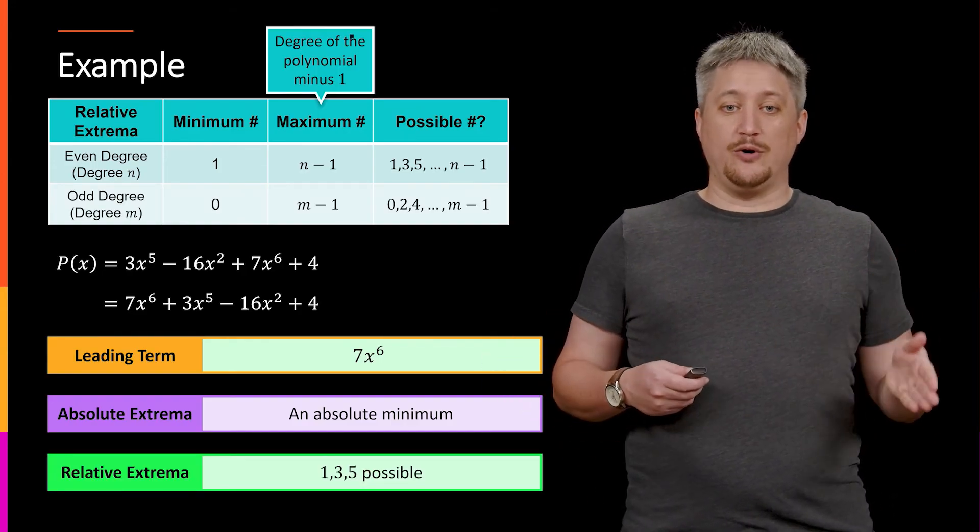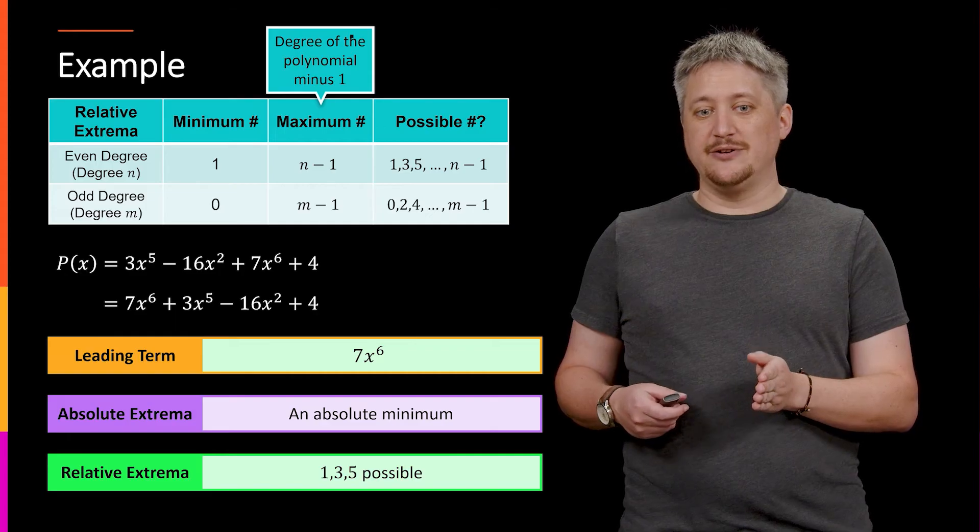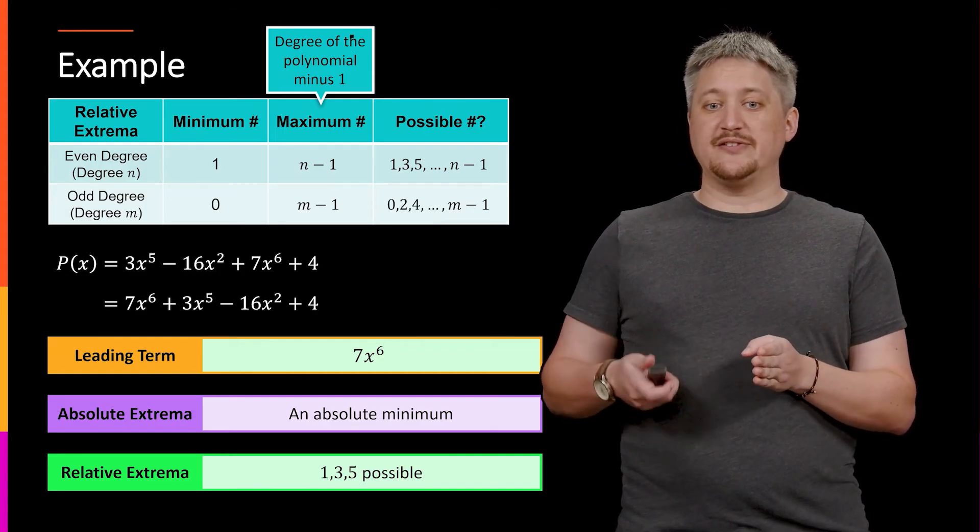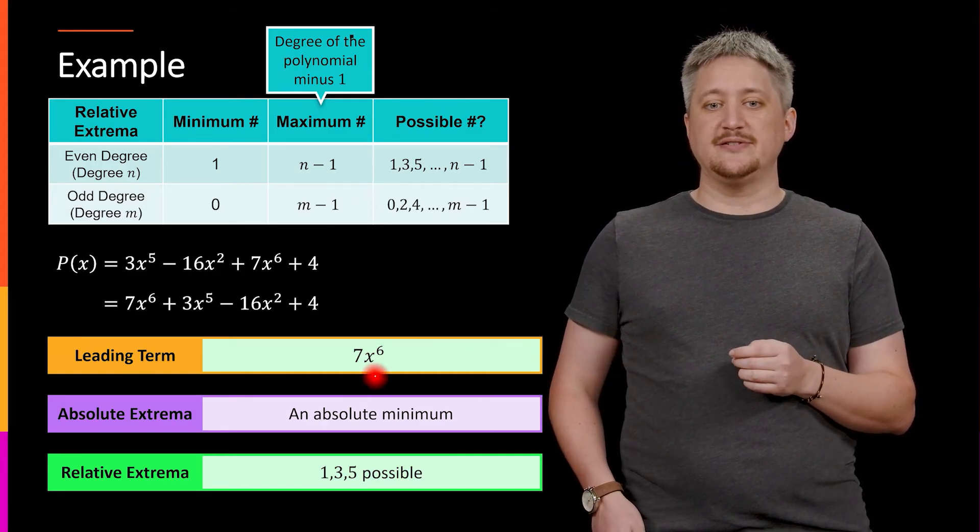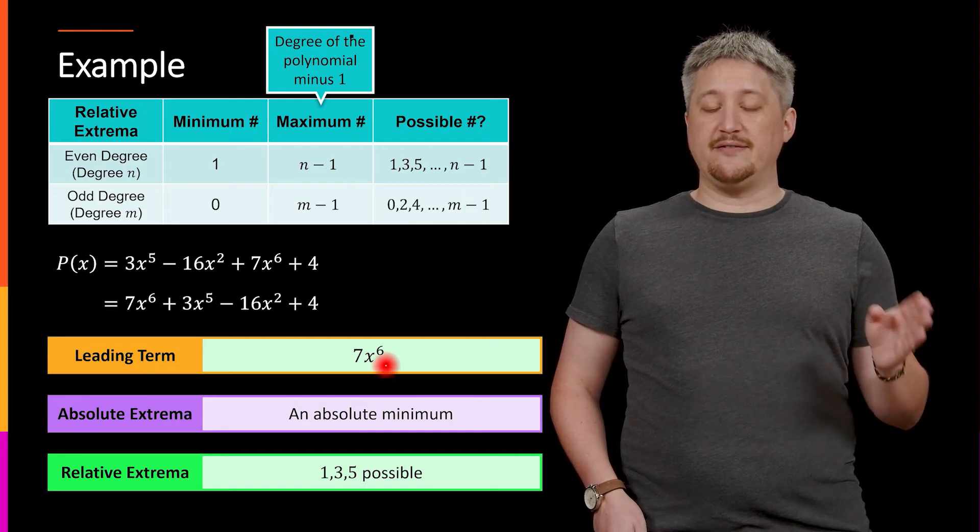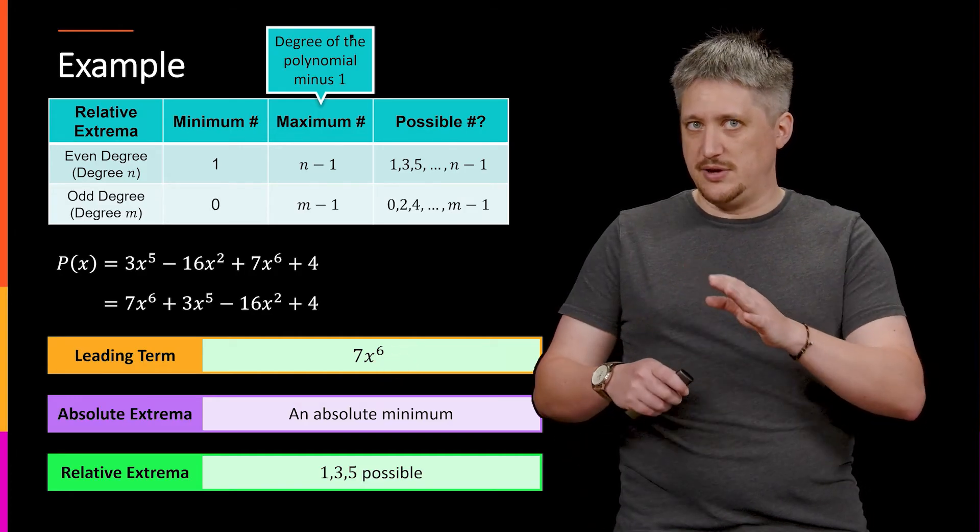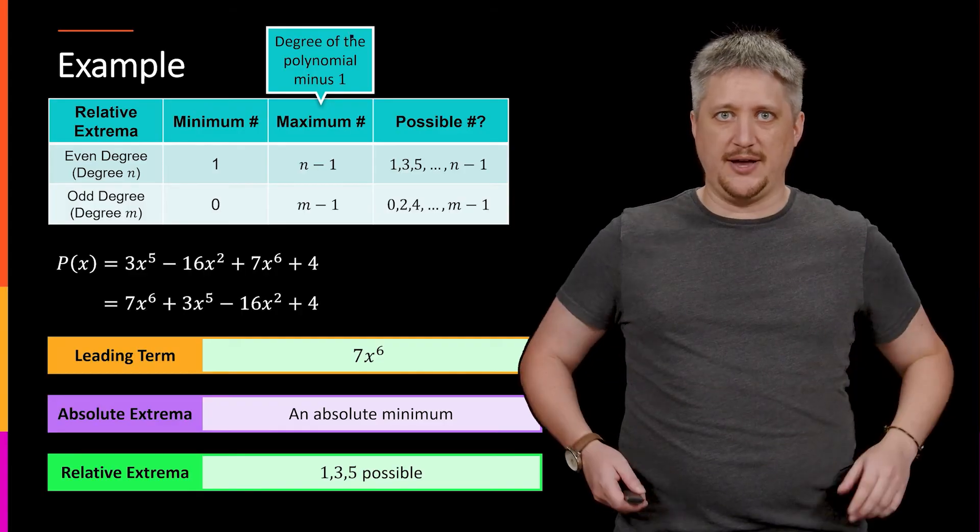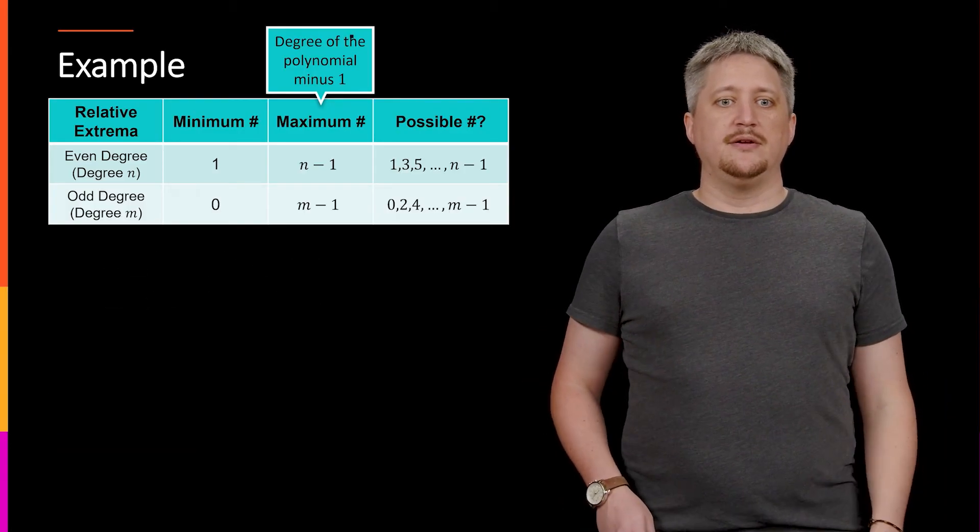And then I add them in pairs. So it has 1, 3, or 5, but 5 is the most it can have because it's the degree, the 6, the degree minus 1. So this can have 1, it can have 3, it can have 5, and that's it. Can't have 7 because that's too high.